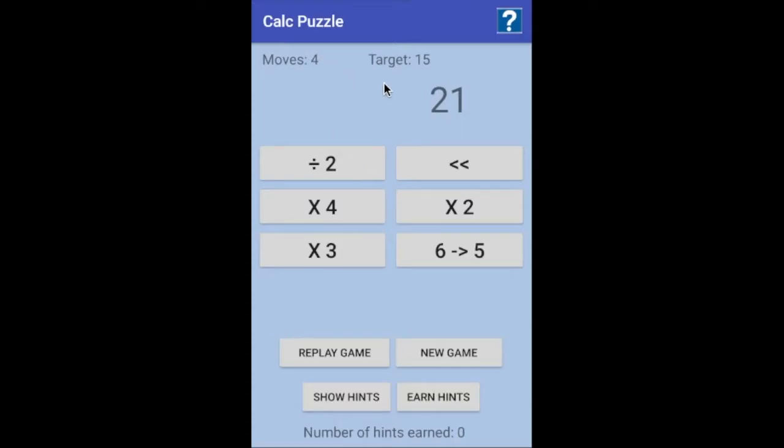Let's learn how to play this calculator puzzle game. The goal of this game is to get this number here to turn into our target number. We're going to use these six buttons to perform operations to this number that will help us get from here to our target.